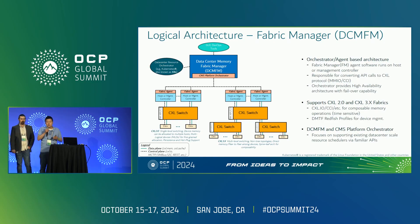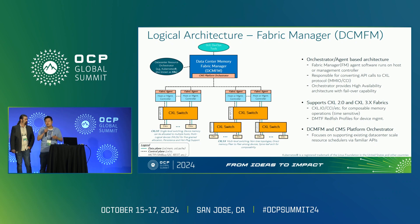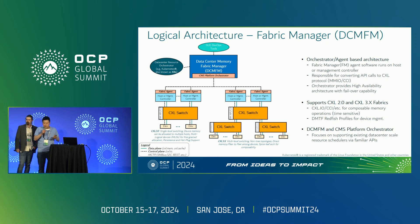CXL 2.0 provides that device memory can be allocated to multiple hosts through a CXL switch for better connectivity. CXL 3.x provides direct peer-to-peer device and memory access through multi-level CXL switches, removing the bottleneck of going through the host. The data center memory fabric manager, also known as the CMS platform orchestrator, focuses on supporting existing data center scale resource schedulers via fabric manager APIs and CCI for handling composable memory operations.